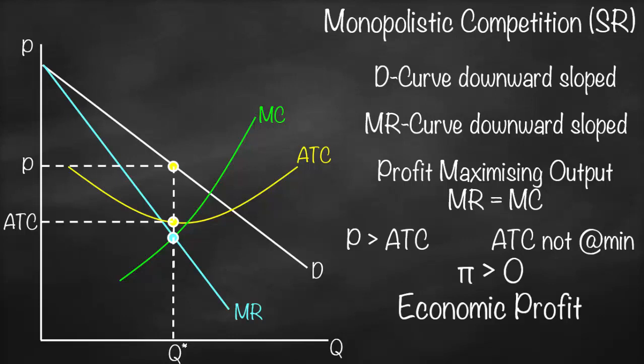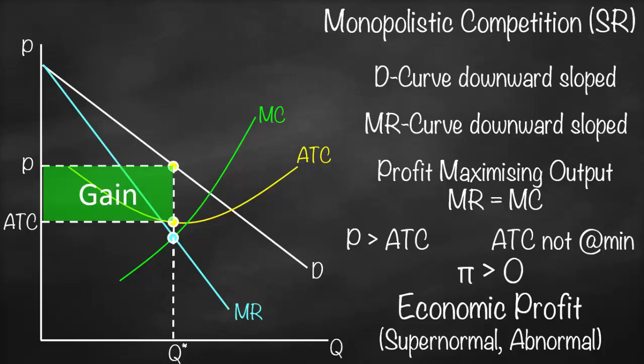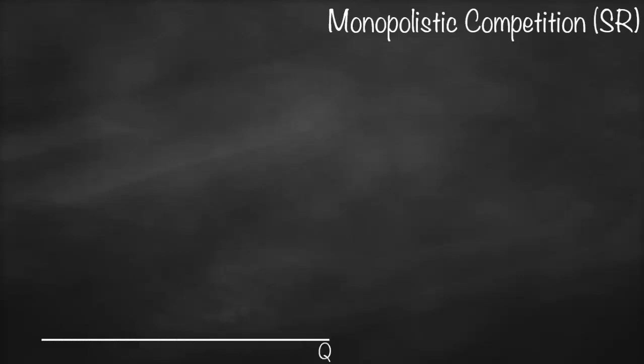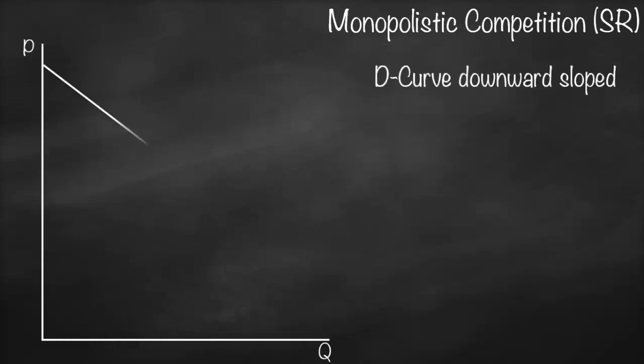Since price is greater than average total cost, our profit is greater than zero. This means we have economic profit, also called super normal profit or abnormal profit. On the graph, this is represented by the green shaded area.